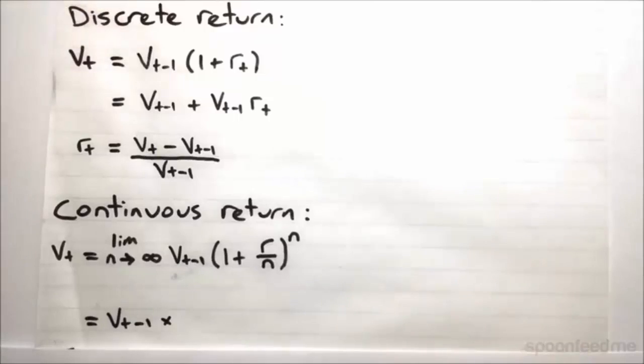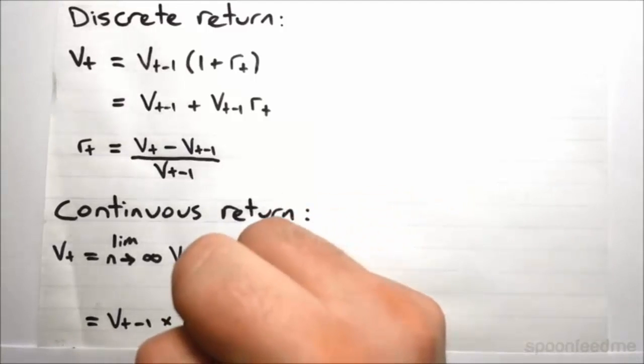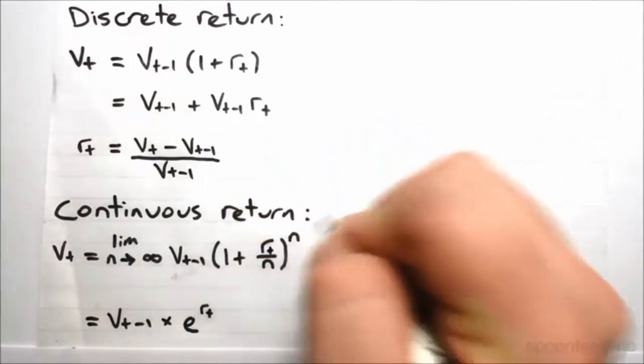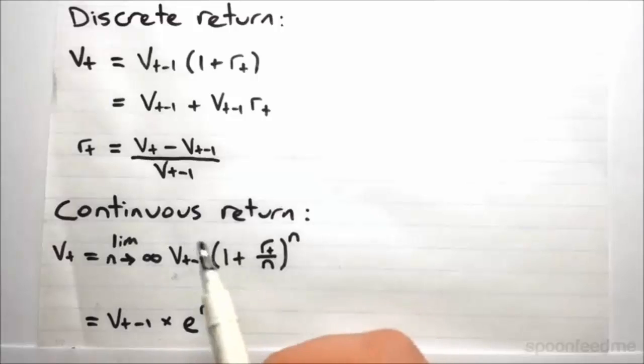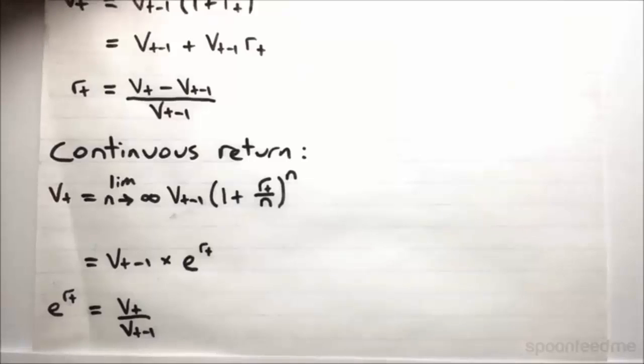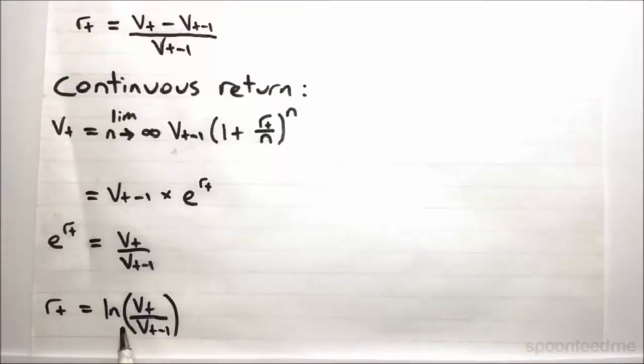So what does this become? It turns out that this is equal to e to the power of rt. The limit of 1 plus r over n to the power of n as n goes to infinity is equal to e to the rt, that's by definition. So once again we just do a little bit of rearranging here, and you've got that e to the rt is equal to this fraction, and then by definition you can say that the rate is equal to the log of that fraction. So that's just by the definition of a log, e to the rt is equal to that, then rt is equal to the log of that.